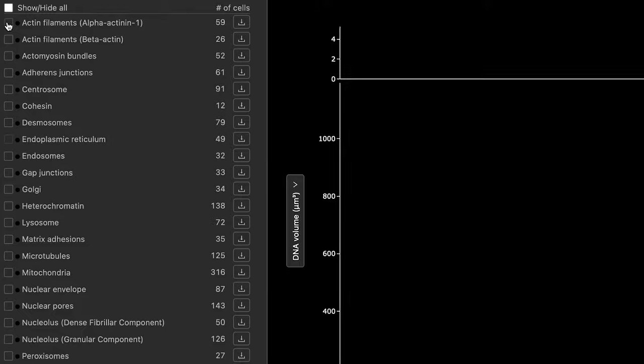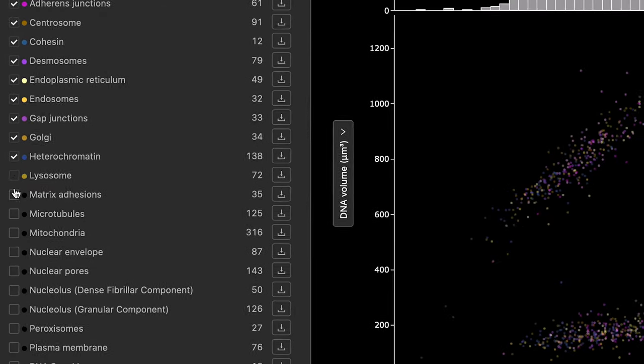And so the way that they're arranged, the number of them, and how they interact with each other could be really important to understanding what a cell is doing and whether a cell has a problem.